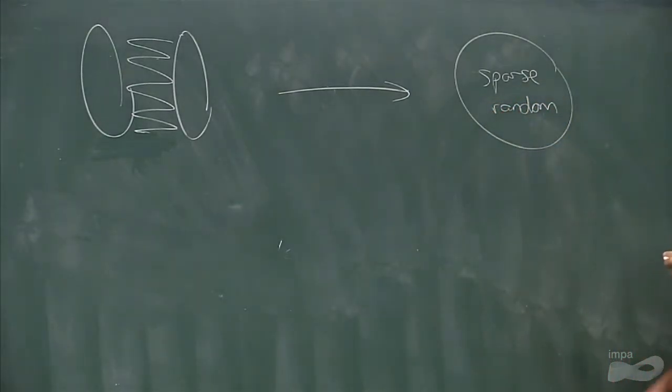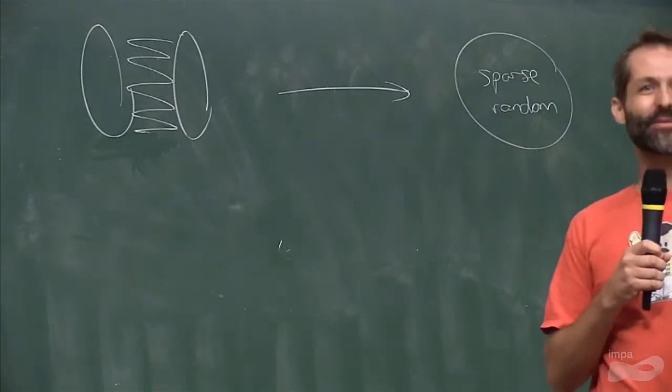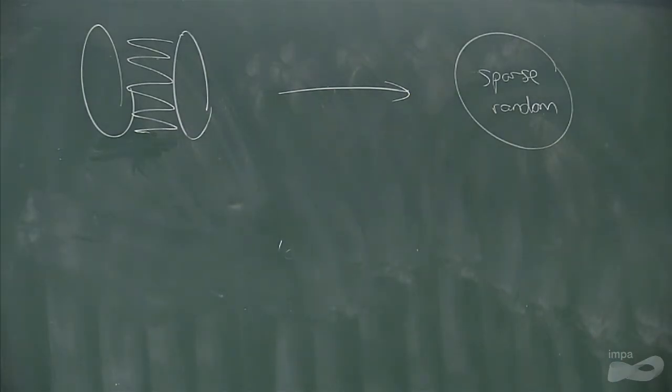So maybe there's an even more basic question on what does the stationary distribution or whatever look like? So really basic question, where does this process spend most of its time?